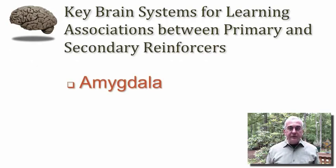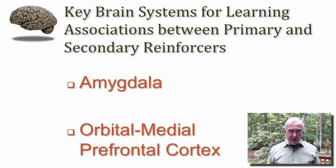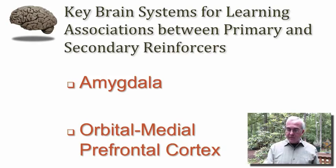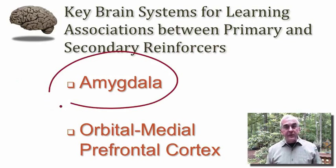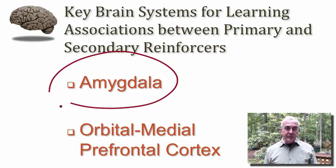These two brain systems would be the amygdala and the orbital medial division of the prefrontal cortex. So let's take a closer look at the amygdala, consider its structure, and then some of its functional properties that pertain to emotional experience and expression.